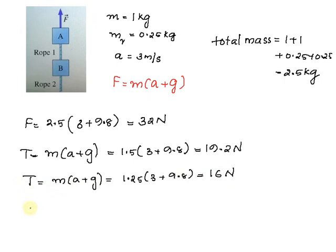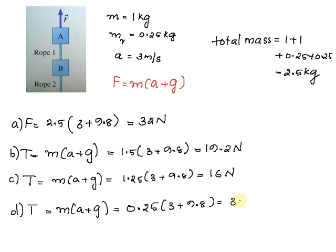And finally we are asked to find the tension at the top of rope 2. This is part D. The tension at rope 2 top part equals mass into acceleration plus gravity. So the mass here is 0.25 into 3 plus 9.8, which equals 3.2 newtons.